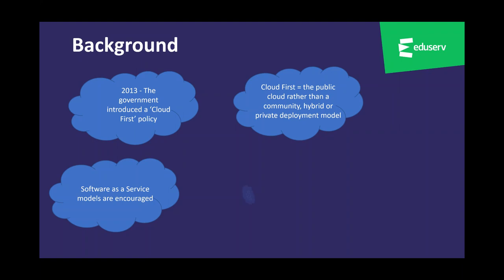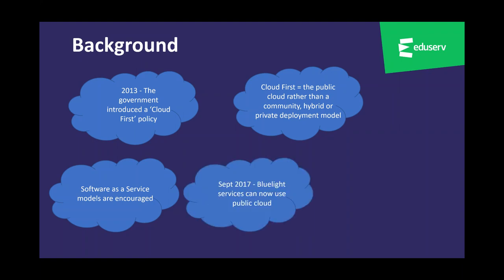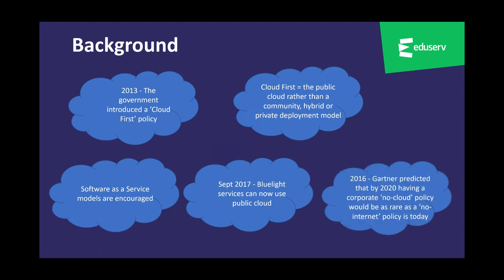However, the latest guidance highlights that security within the public cloud is often superior to other alternatives. This is underpinned by the recent announcement that blue light services can use public cloud, so the data held by police, ambulance, fire, and the coast guard can be stored in public cloud. This really supports the journey of travel, and Gartner predicts that by 2020 having a corporate no-cloud policy will be as rare as the no-internet policy is today.